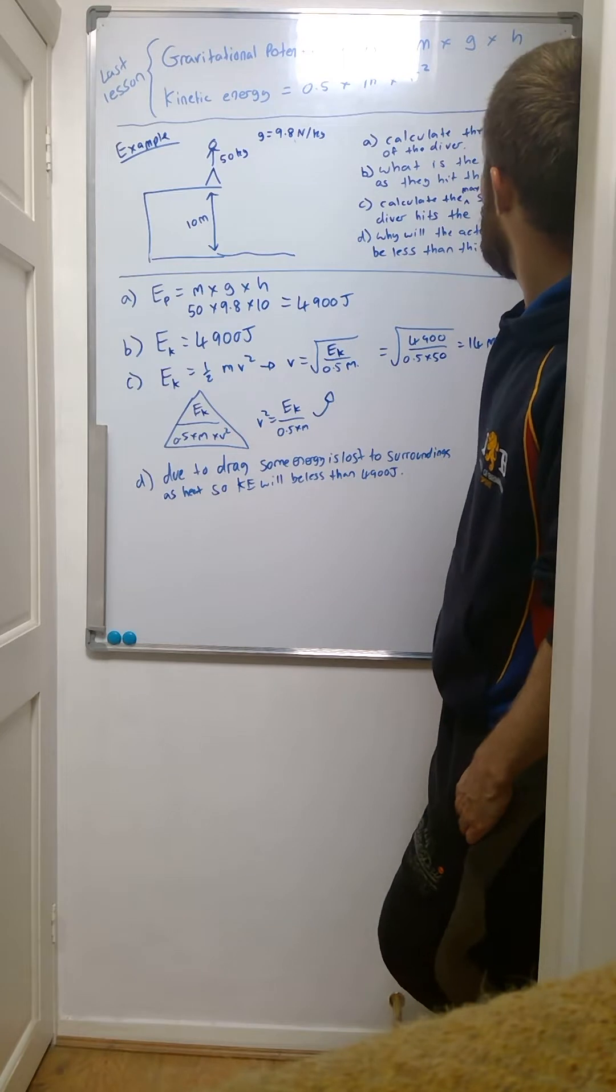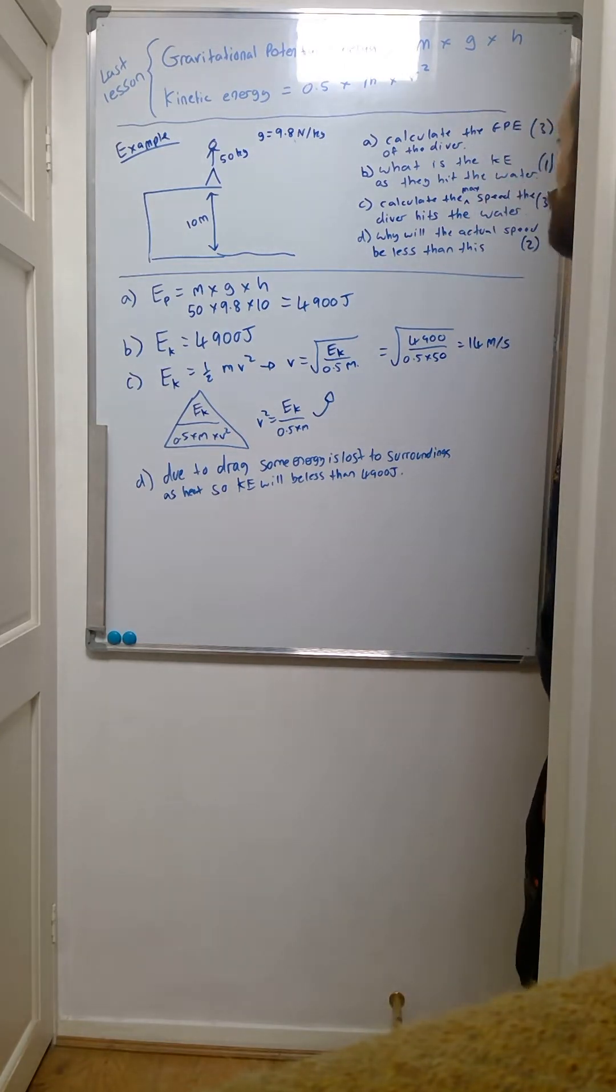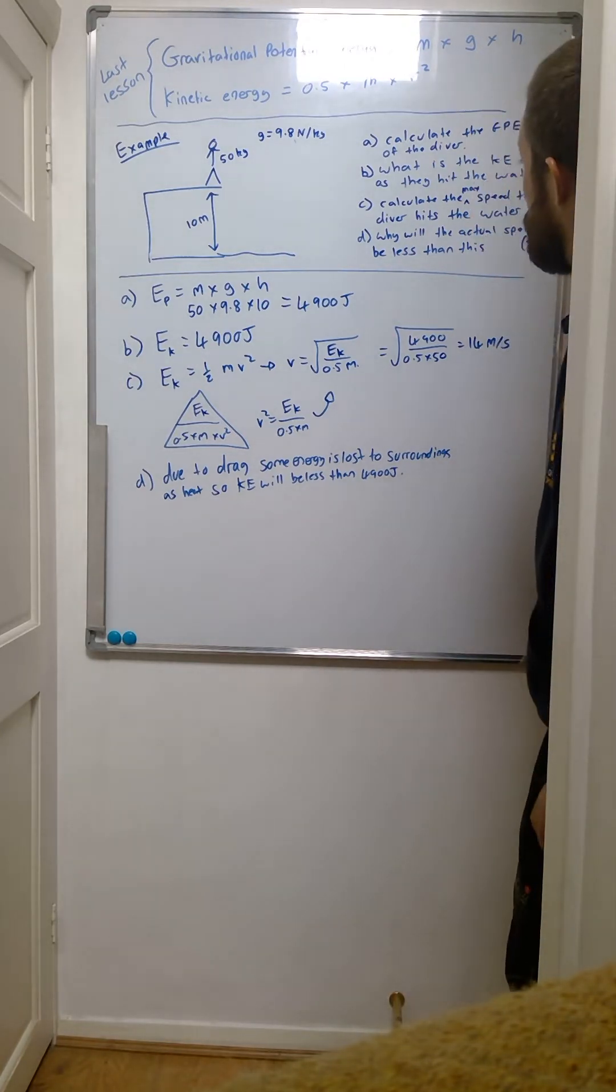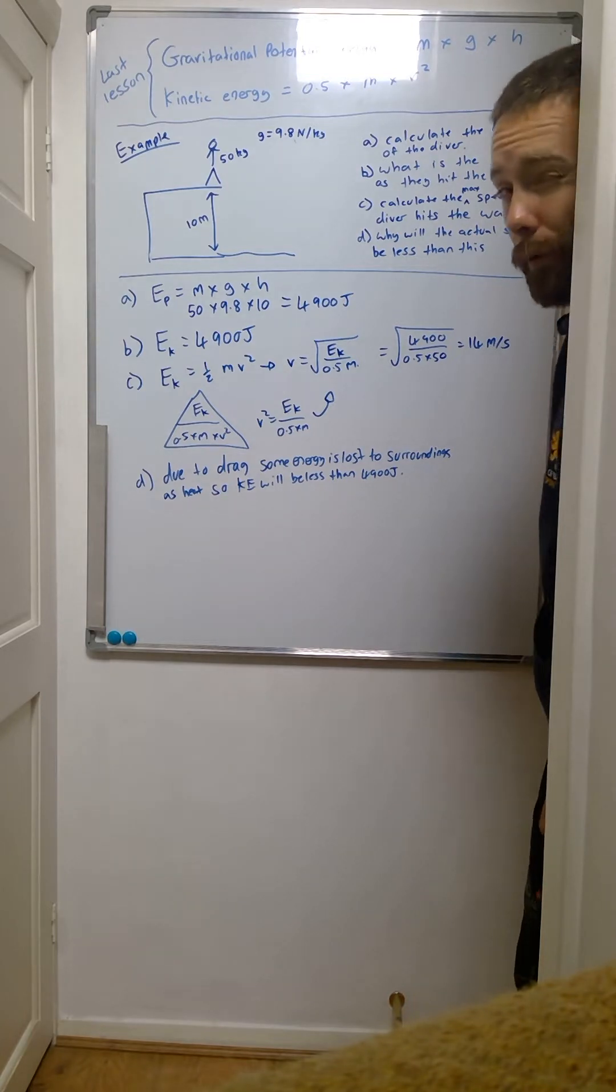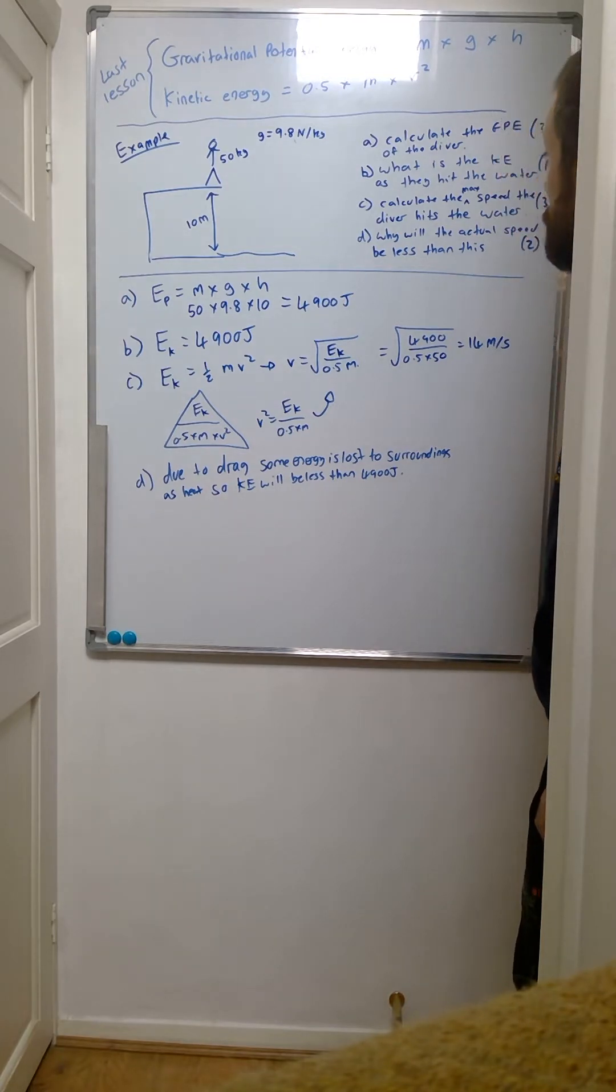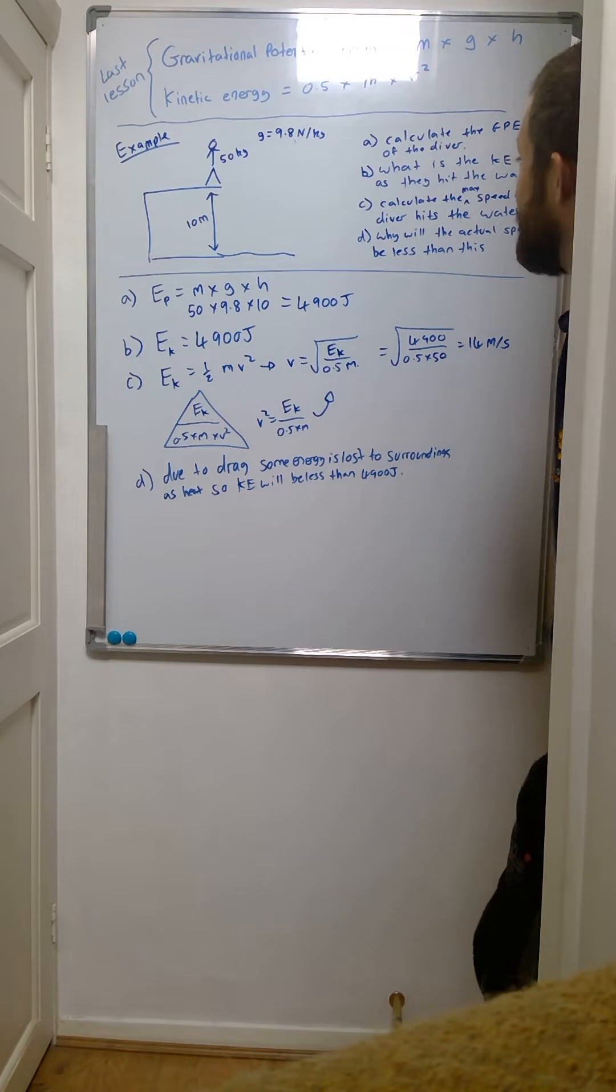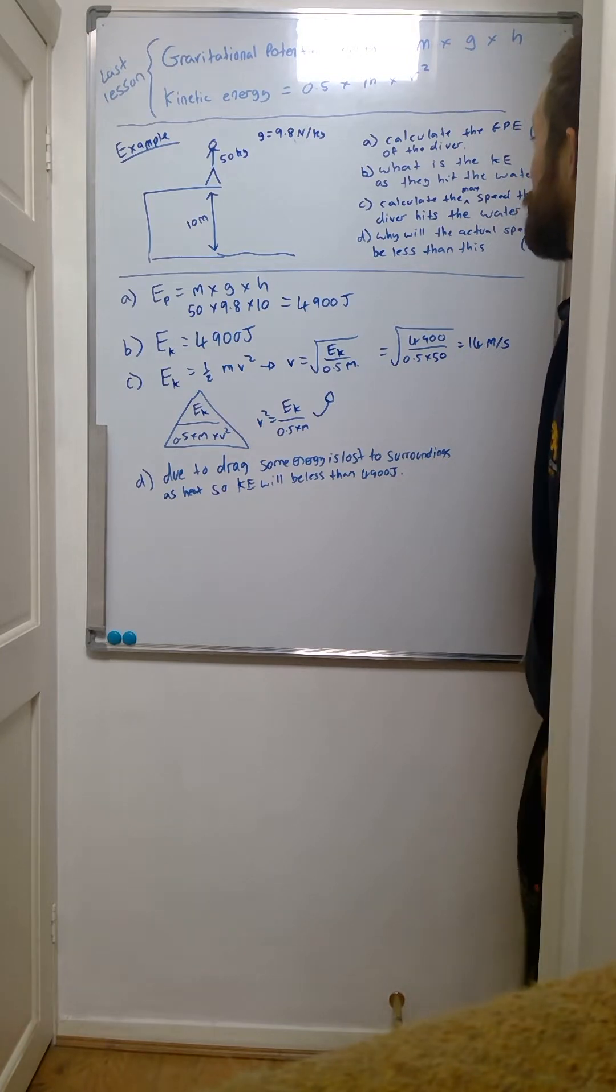Now we've got four questions here. The first question: calculate the gravitational potential energy of the diver. You're going to get two or three marks for that depending on where this is in the exam paper. What is the kinetic energy that they hit the water with?